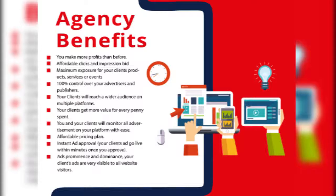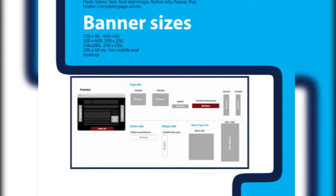Ad formats and sizes: the ad server has all the standard ad formats like banner, flash, video, text, text and image, native ads, pop-up, pop-under, complete page ad, and more. Banner sizes include 728x90, 468x60, 300x600, 300x250, 336x280, 250x250, and 300x60, and so on, available for both mobile and desktop.